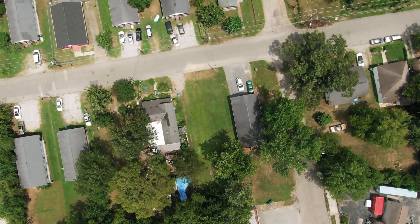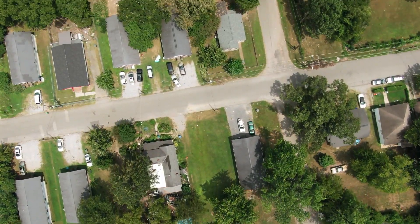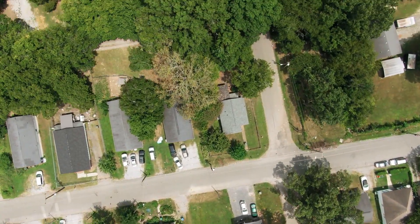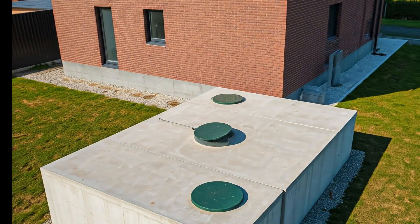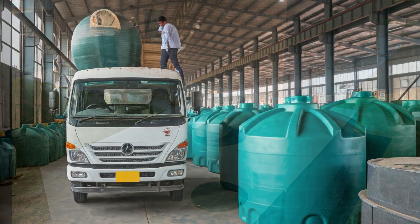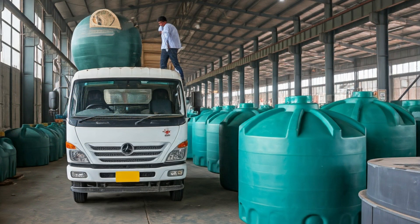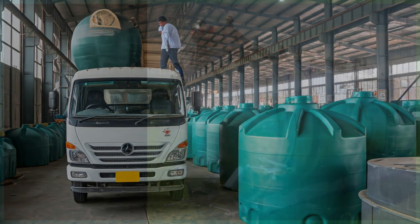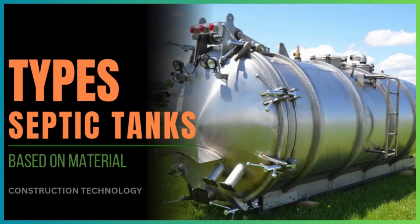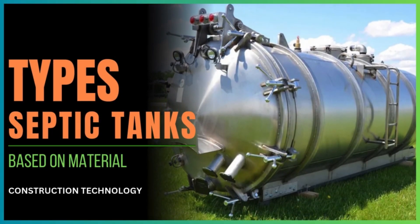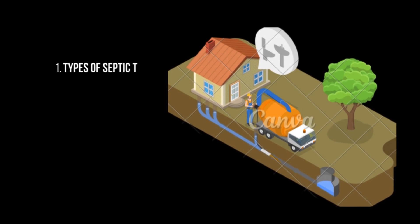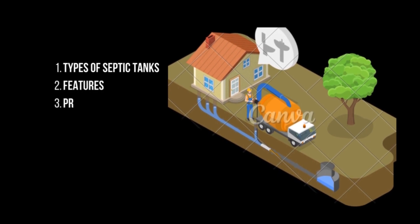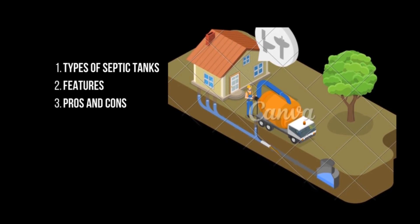If you live off the grid or have a property that isn't connected to a municipal sewer system, then a septic tank is likely your wastewater treatment solution. But with all the different materials available, choosing the right one can be confusing. In this video, we'll break down the five main types of septic tanks based on their material, discuss their features, pros and cons, and which ones might be the best fit for your needs.